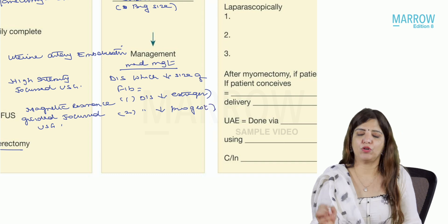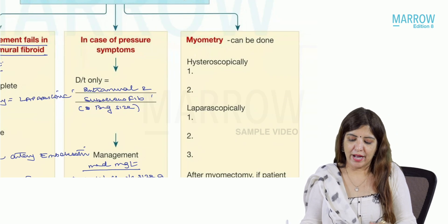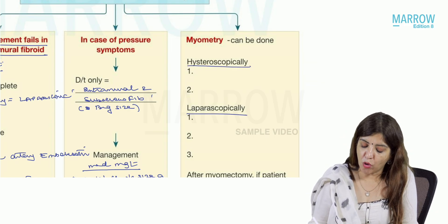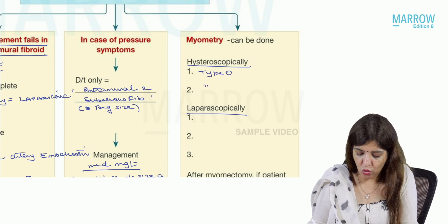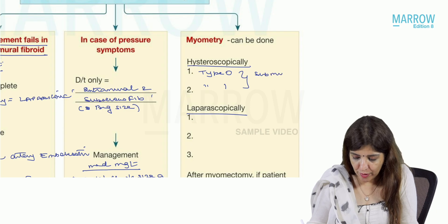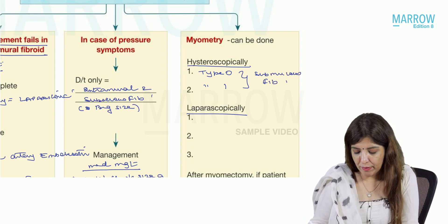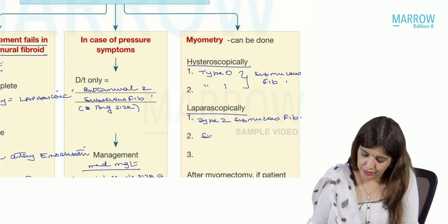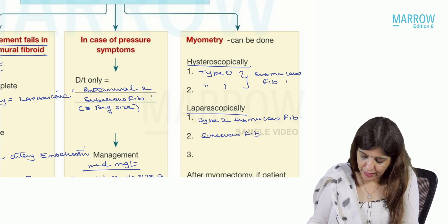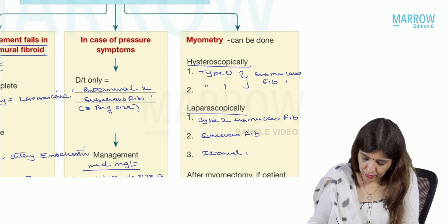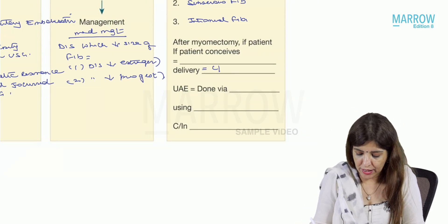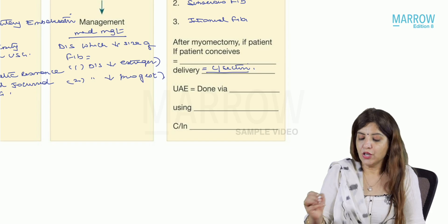Regarding myomectomy routes: hysteroscopic myomectomy is done for Type 0 and Type 1 submucous fibroid. Laparoscopic myomectomy is done for Type 2 submucous fibroid, subserous fibroid, and intramural fibroid. After myomectomy, if the patient conceives, delivery must be done by cesarean section.